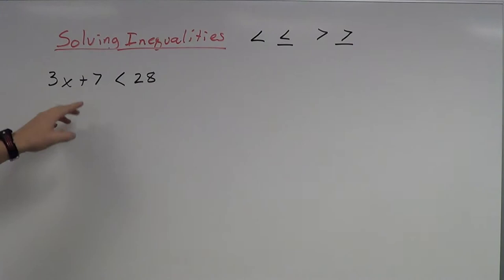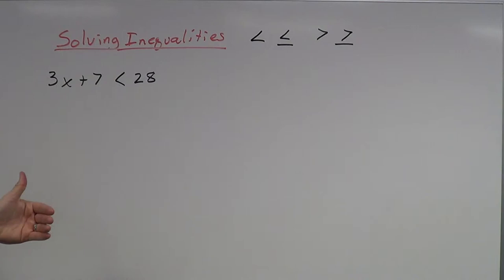So if I plug in the number 1 — 1 times 3 plus 7, that's 3 plus 7 is 10. 10 is less than 28, so 1 is an answer. But what other solutions are there? What other numbers can I use? I'm going to attempt to find all of them, not just a few.